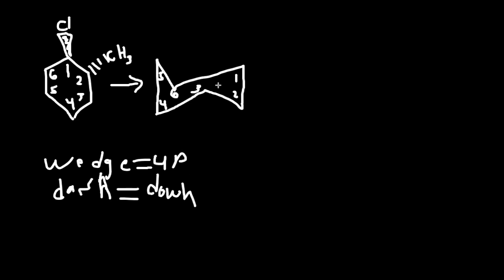When determining if it's axial or equatorial, we first look at the numbers. Before we do that, we must know what's up and what's down on the chair. Position 1 up here is up; position 6 over here is down because it goes downhill; position 5 is up. So we have up, down, up. On the bottom: position 4 is down, position 3 is up, position 2 is down. So the pattern is up, down, up, down, up, down — you can just see it from the structure itself.